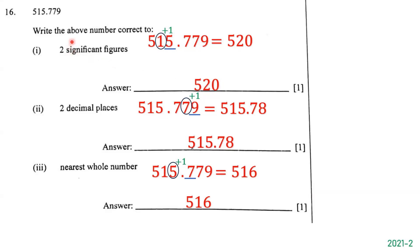Now we want to write 515.779 correct to two decimal places. The first number behind the decimal point is 7 and the second is 7, so we circle that second 7 — it's in the hundredths place — and underline the 9 to its right. Since 9 is greater than 5, we round up: 7 plus 1 is 8. We keep 5, 1, 5 and write .78, dropping the 9. The answer is 515.78.